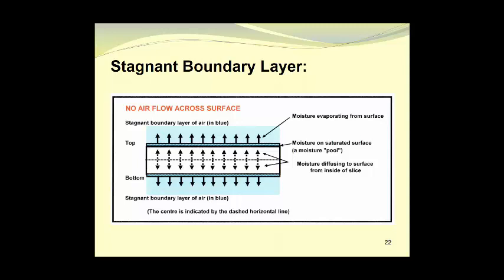In this diagram, we see a slice of material with a stagnant boundary layer of air around it shown in blue. We've got a saturated surface with a pool of moisture present. Moisture evaporating from this pool goes into the stagnant air around the material and saturates it with moisture. This creates an equilibrium relationship between the saturated surface and the saturated air, and as long as the air is saturated, no more water can be absorbed by it.